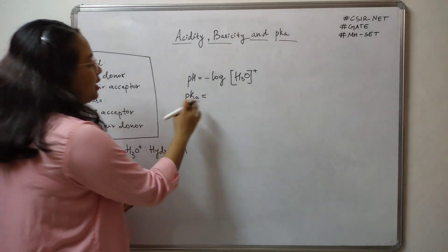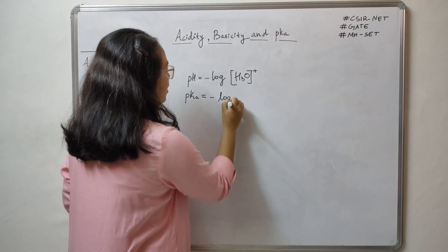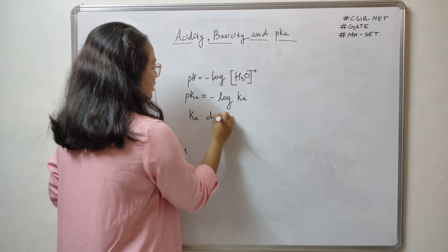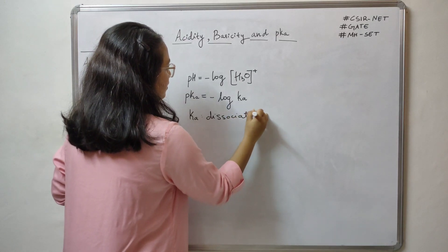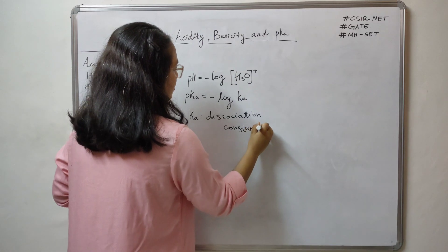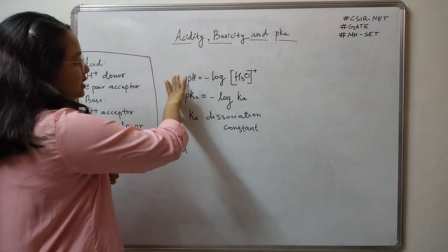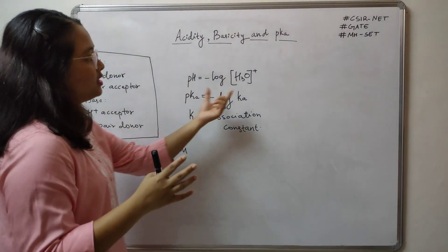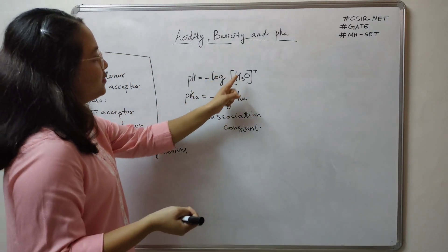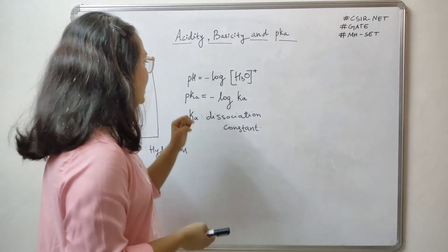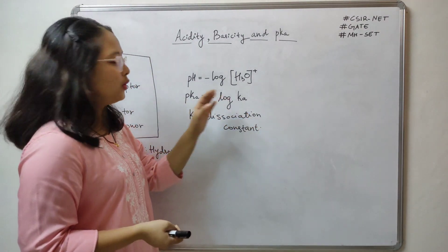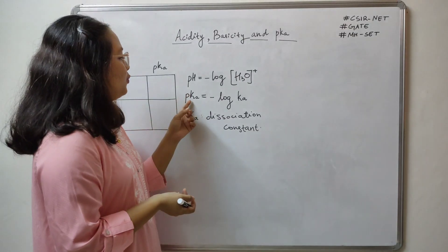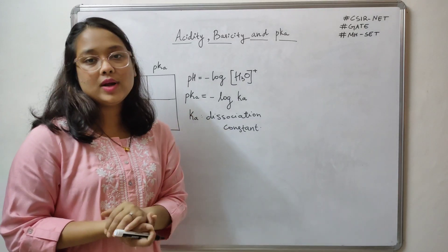Coming to pKa: pKa is defined as negative log of ka, where ka is the dissociation constant. So pH = -log[H3O+] — the square brackets represent concentration — and pKa = -log(ka). Next we will try to understand how pKa and ka differ with the type of acid we are dealing with.